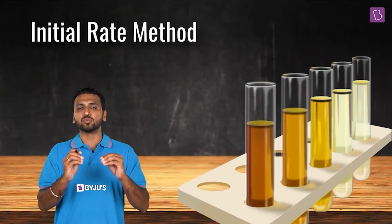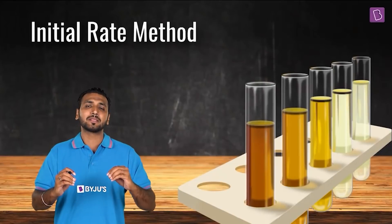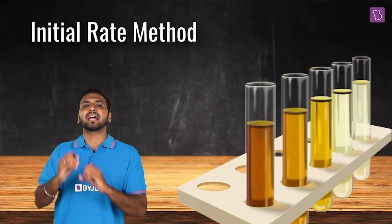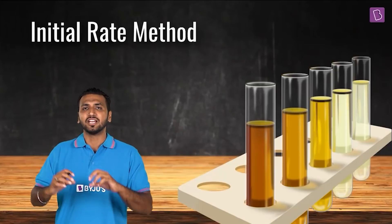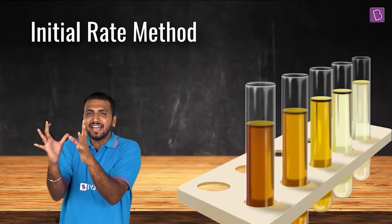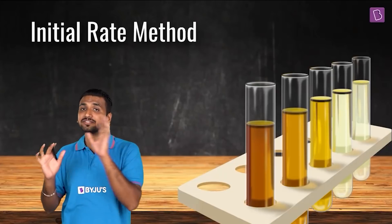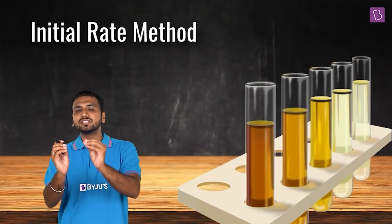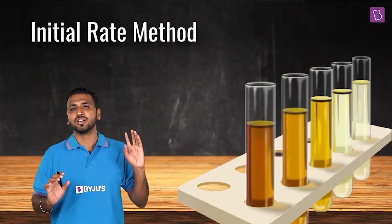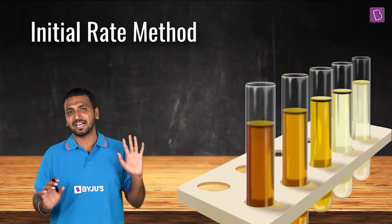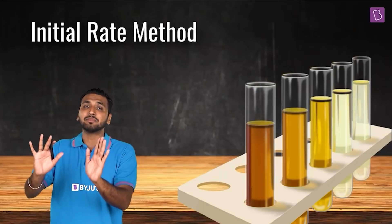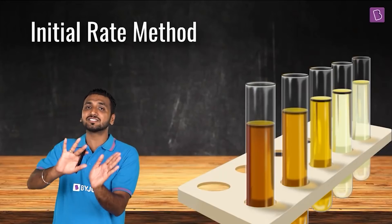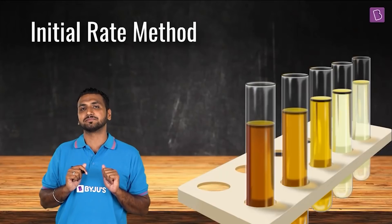In the initial rate method, what you do is — let's say you have some reactants — you vary the concentration of one of the reactants and observe the change in the rate of the reaction, while keeping the concentration of the other reactants constant.